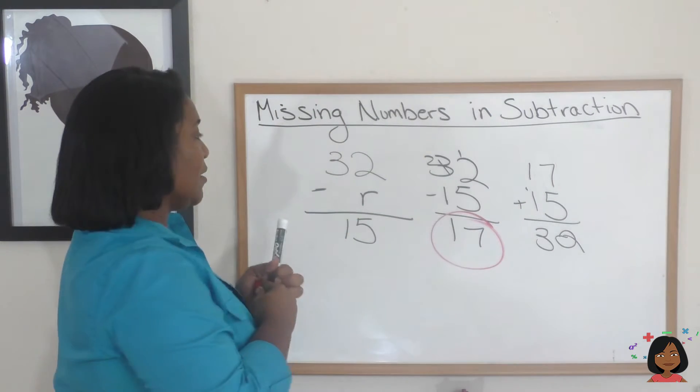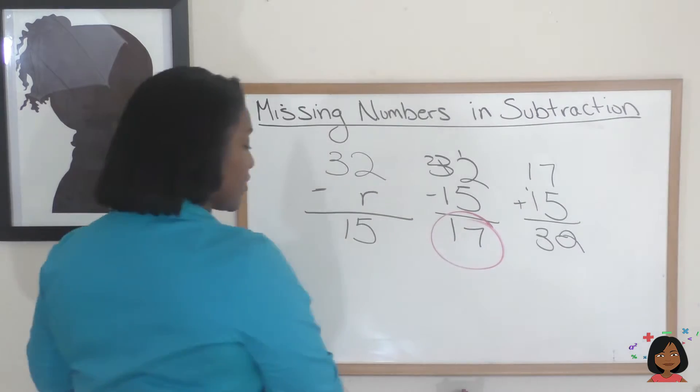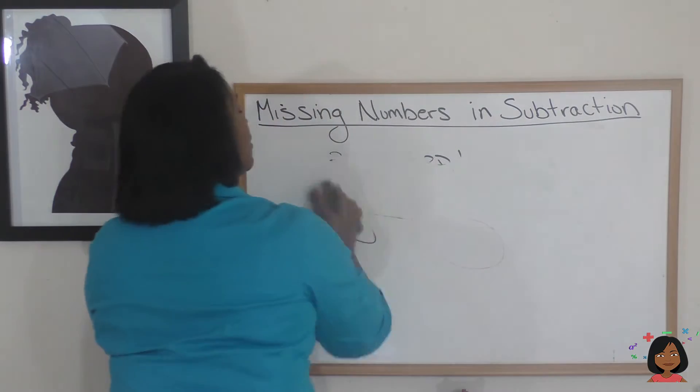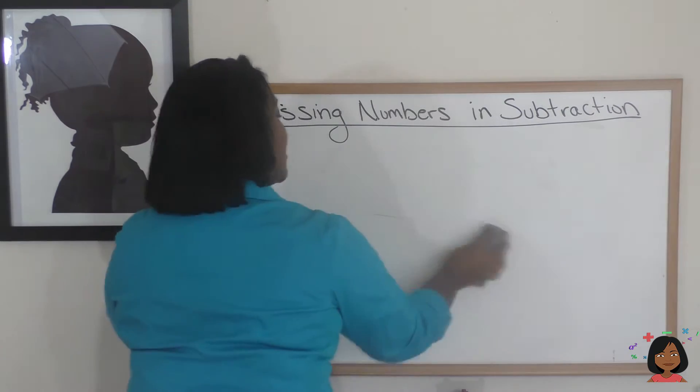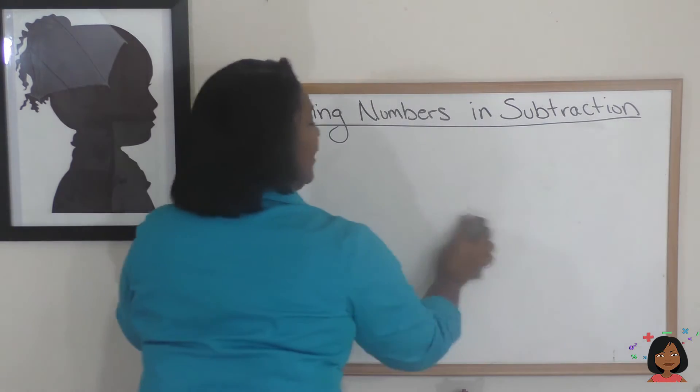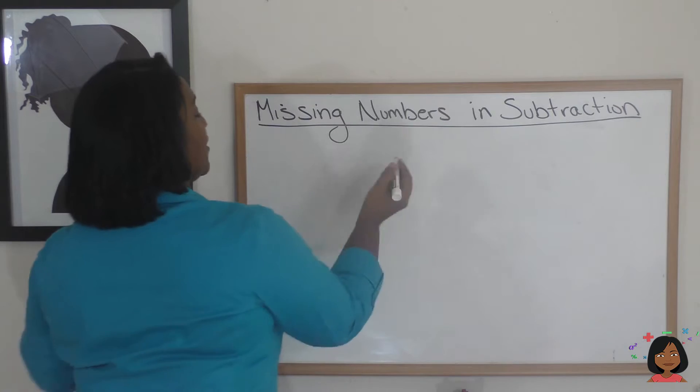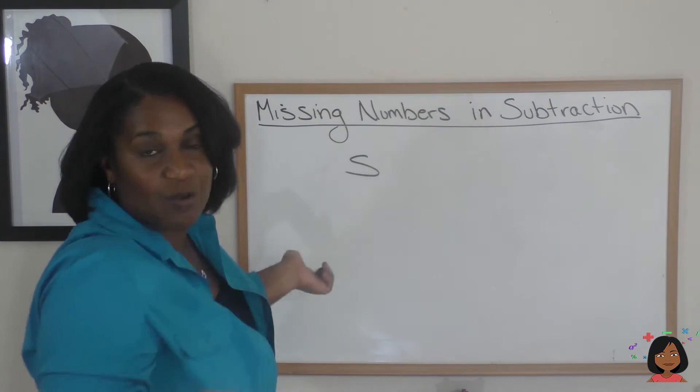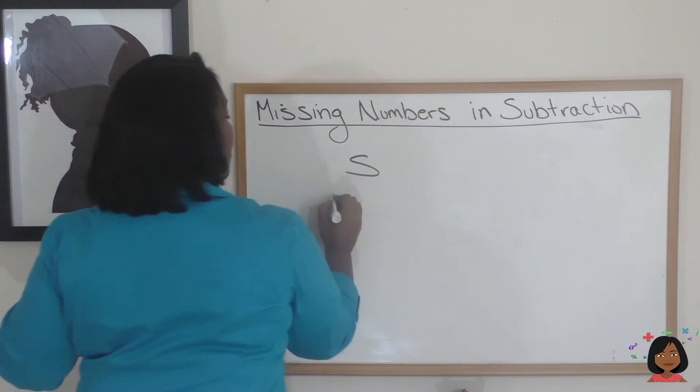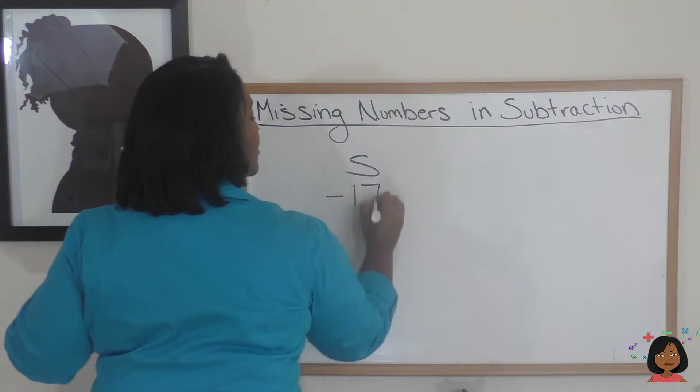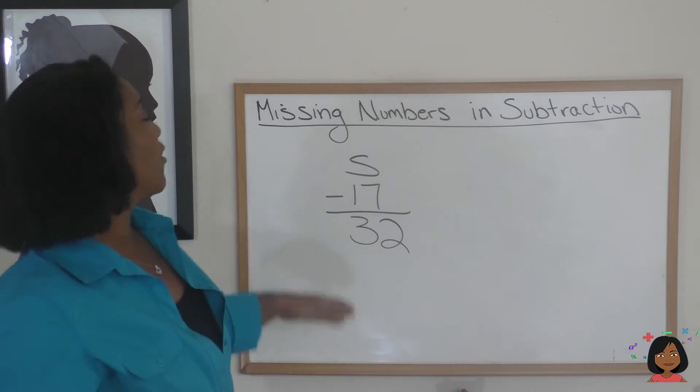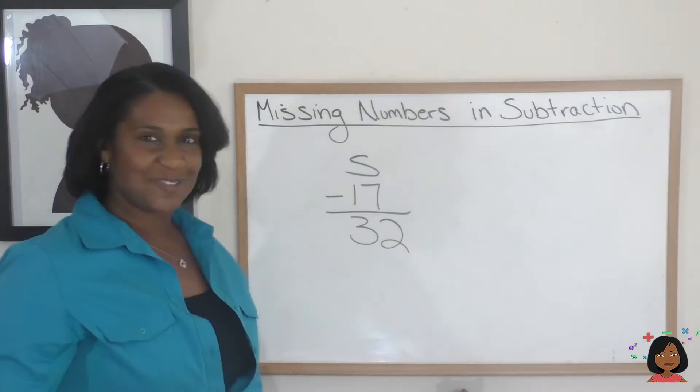Let's give you another problem, because subtraction worked this time, because we were trying to find that subtrahend number. But what if I had a number, we're going to start with s. I don't know what s is, and I want to subtract 17, and I want to end up with 32. Well, that looks like how we do our built-in answer checker, doesn't it?